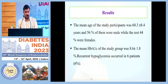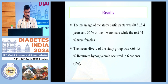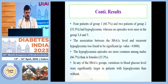The mean age of study participants was 63.3 ± 8.4 years; 56 percent were men and 44 percent were females. The mean HbA1C of the study groups was 8.6 ± 1.8 percent. Recurrent hypoglycemia occurred in six patients (6 percent): four patients from Group A and two patients from Group B (33.3 percent) had hypoglycemia. No episodes were seen in Groups 3, 4, and 5. The association between HbA1C level and recurrent hypoglycemia was found to be significant.